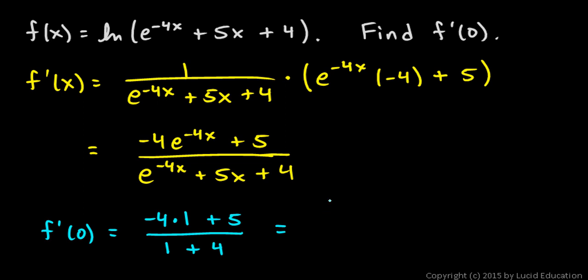So easy enough: negative 4 plus 5 is 1, and 1 plus 4 is 5, so the answer is 1 fifth.